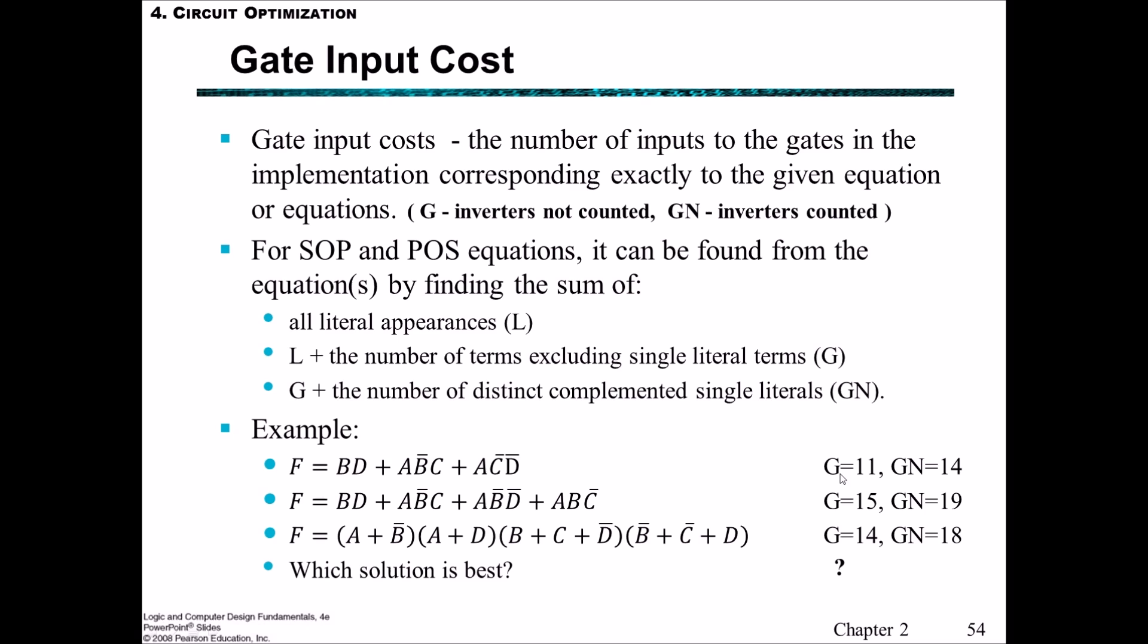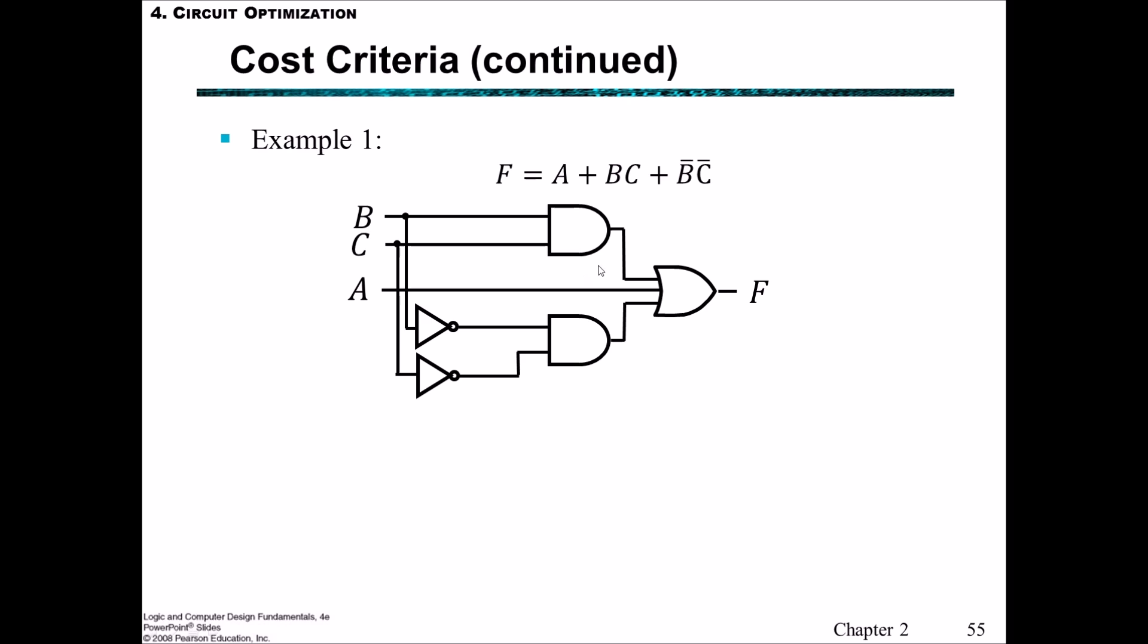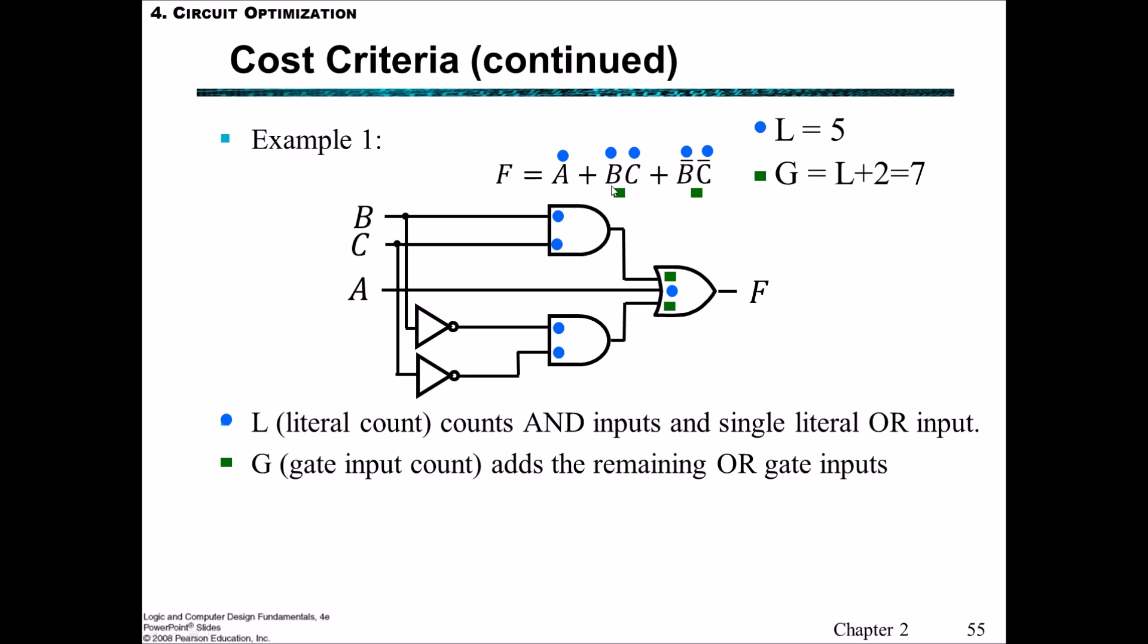Here's another example. We have the actual circuit drawn up and we can count first of all the number of literals, which is five, and it corresponds to these inputs here in blue dots. The gate input count is L plus these two more terms, so seven. And then if we also include the gate input count with the NOTs, then we have these two complemented single literals, and so we add two more. This is also two more inverters that are in the picture.